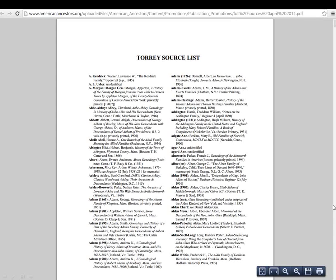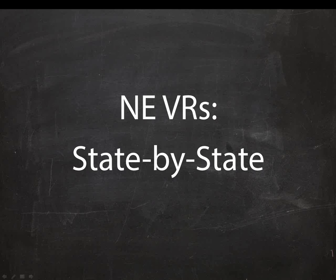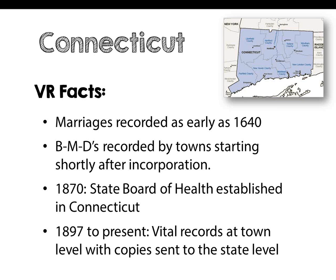Now that we've introduced some of the generally used New England databases on AmericanAncestors, I would like to acquaint you with the sources we have state by state. We'll start with Connecticut. Marriages in Connecticut were recorded as early as 1640. Birth, marriage, and death records are also recorded by towns, starting shortly after the incorporation of the community. In 1870, a State Board of Health was established in Connecticut to help the compilation of vital records, and starting in 1897, vital records at the town level were requested to have copies sent to the state — creating a duplicate copy, which is true in mostly all the New England states.